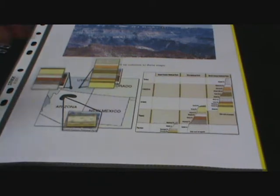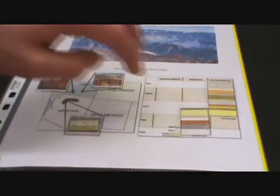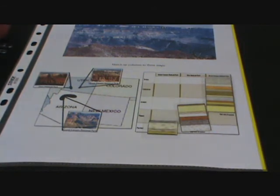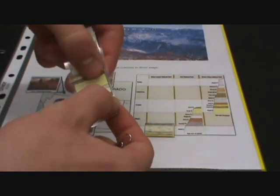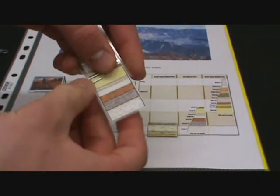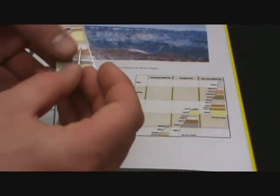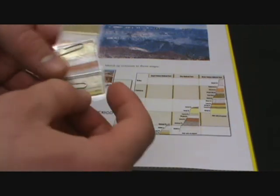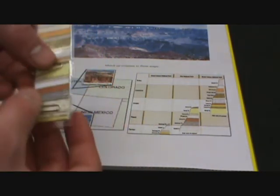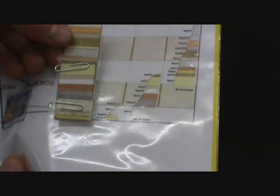Then, have them match up the columns with their corresponding National Park Stratigraphic Columns on the other diagram. They should paperclip the columns together where they overlap. Tell them they have just created a geologic column for the entire southwestern United States.